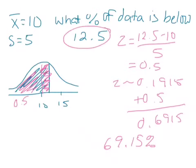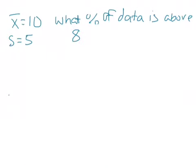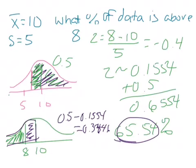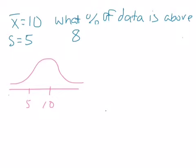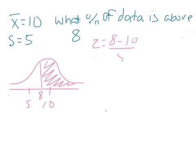Now let's use the same mean of 10 and standard deviation of 5, but this time ask: what percentage of data is above 8? Notice that 8 is below the mean. Picturing the normal curve, here's 10 and the next standard deviation below is 5, so 8 falls between them. The first thing we do is find the z-score for 8.